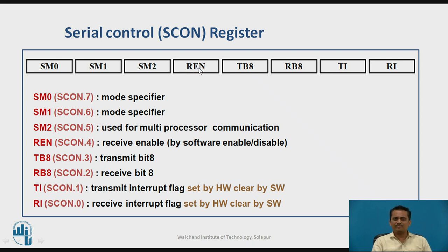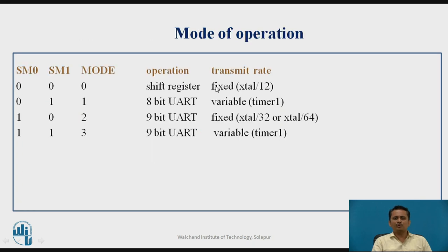There is no Transmission Enable bit — the intent is that the programmer only needs to write data into SBUF when they want to transmit, so no separate enable bit is needed. The remaining three bits are for mode selection: SM2 is used for multi-processor communication when more than two controllers are communicating with each other, and SM0 and SM1 together define four different modes of operation of the UART module.